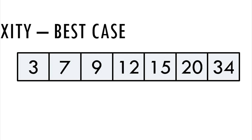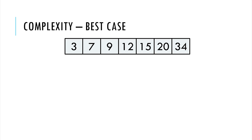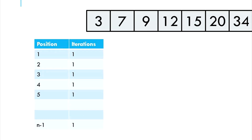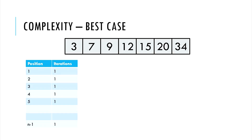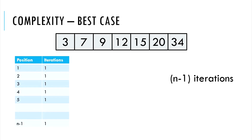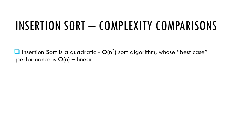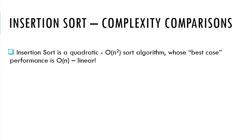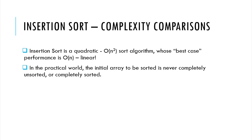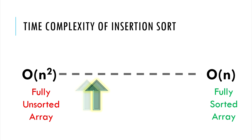Similarly, if our initial array is already sorted in the required order, we get the best possible runtime. At position 1, we compare with index 0, realize the value at index 0 is already smaller, and don't need any shift or insertion. The same story repeats at each position — just one iteration each. For all n-1 positions, we do one iteration each, totaling n-1 iterations. This means the asymptotical time complexity of insertion sort is O(n) in the best-case scenario. In general, the time complexity is somewhere between O(n²) and O(n).